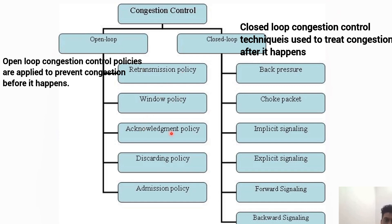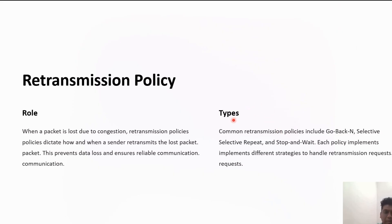window policy, acknowledgement policy, discarding policy, and admission policy. The closed loop can be further divided into back pressure, choke packet, implicit and explicit signaling, and forward and backward signaling.